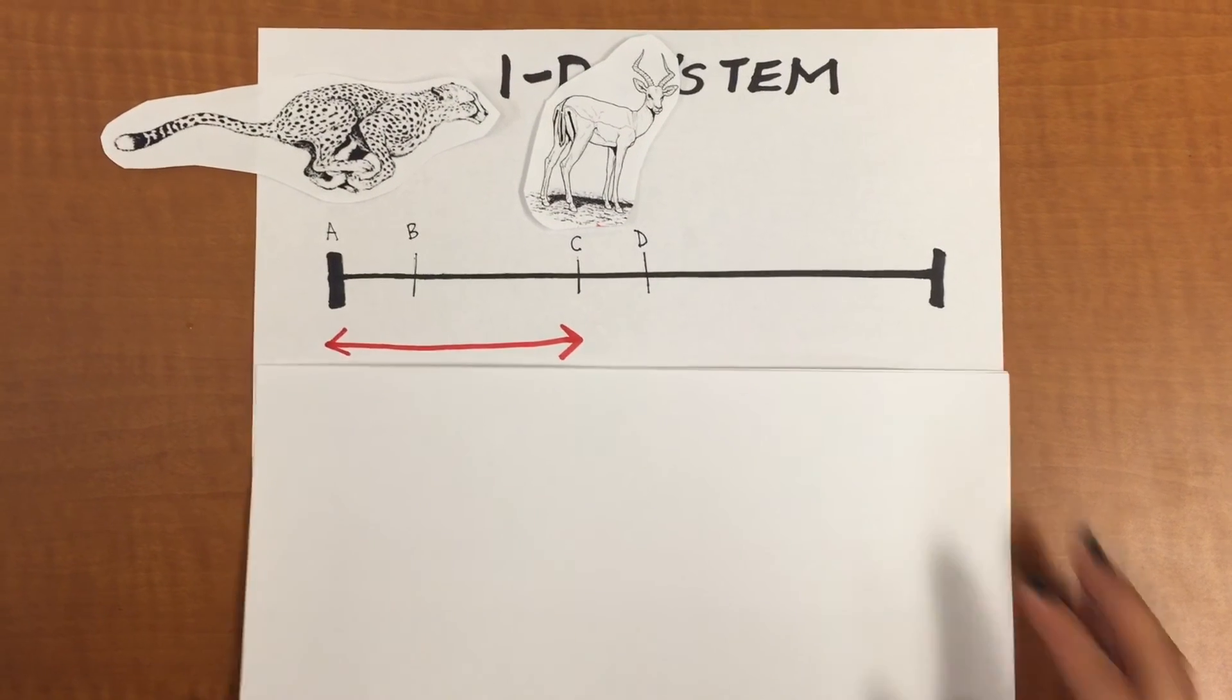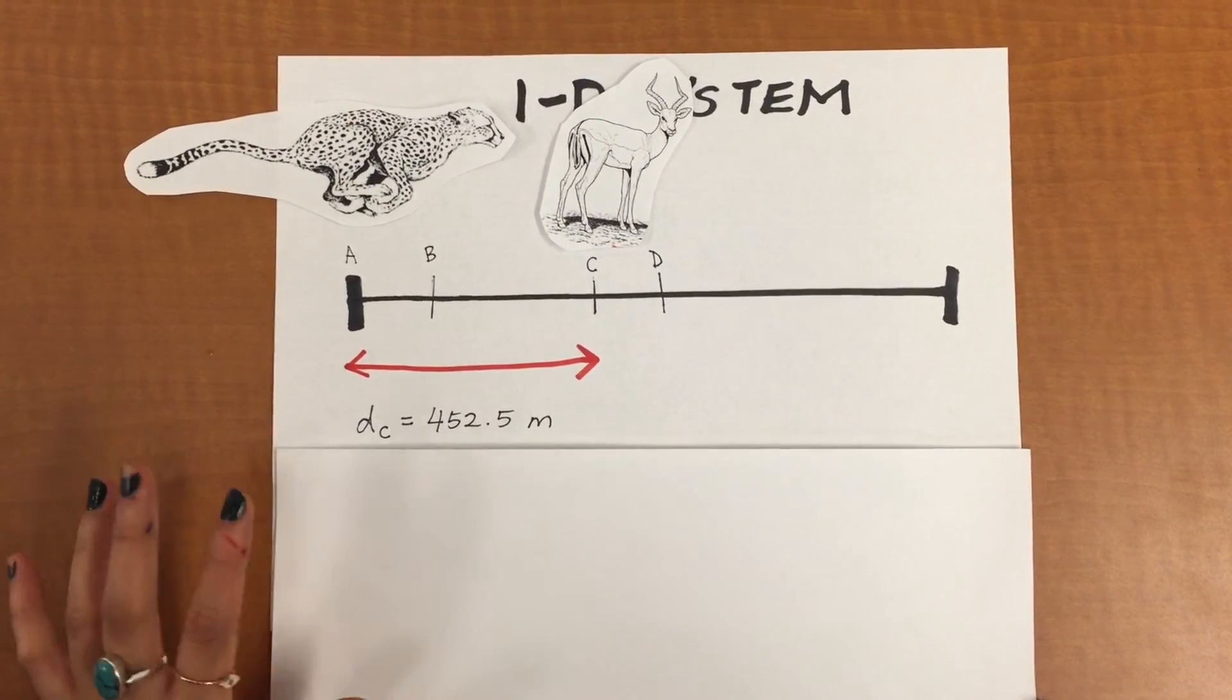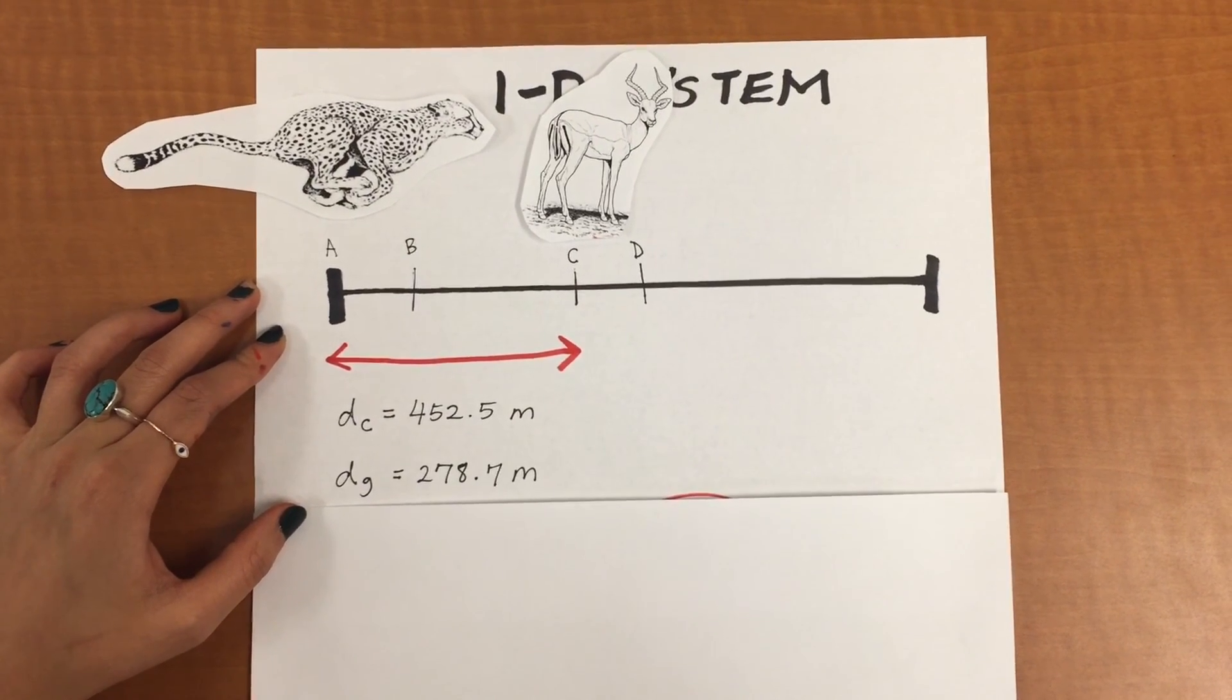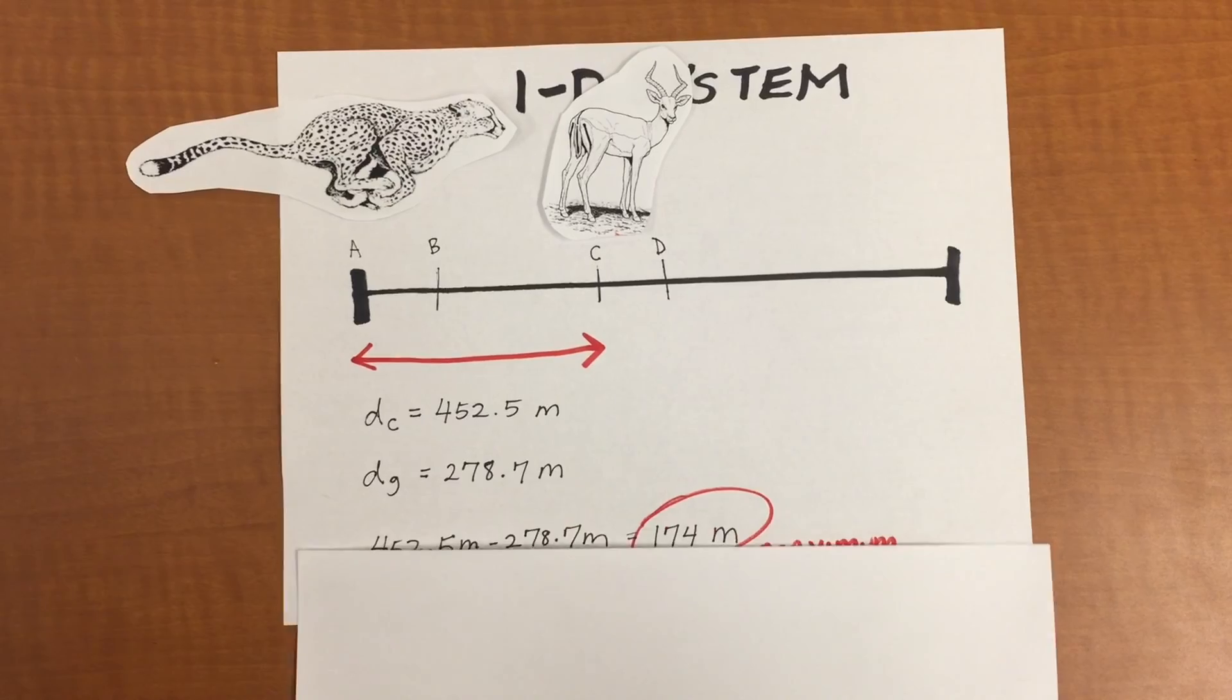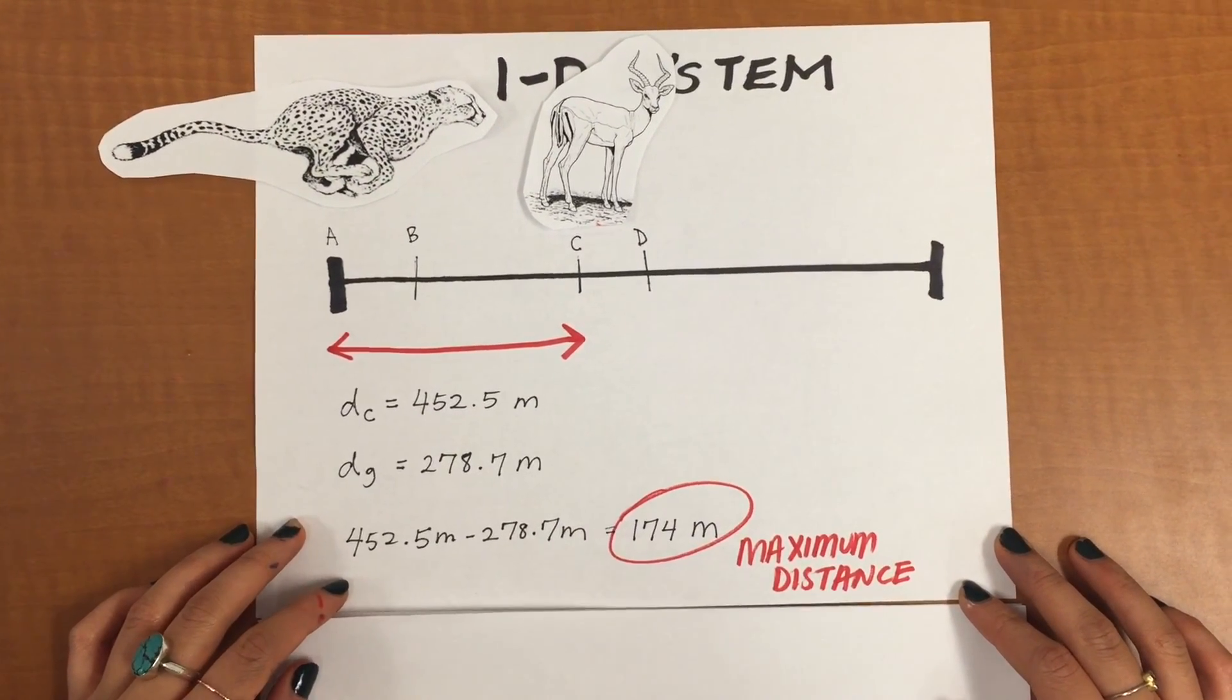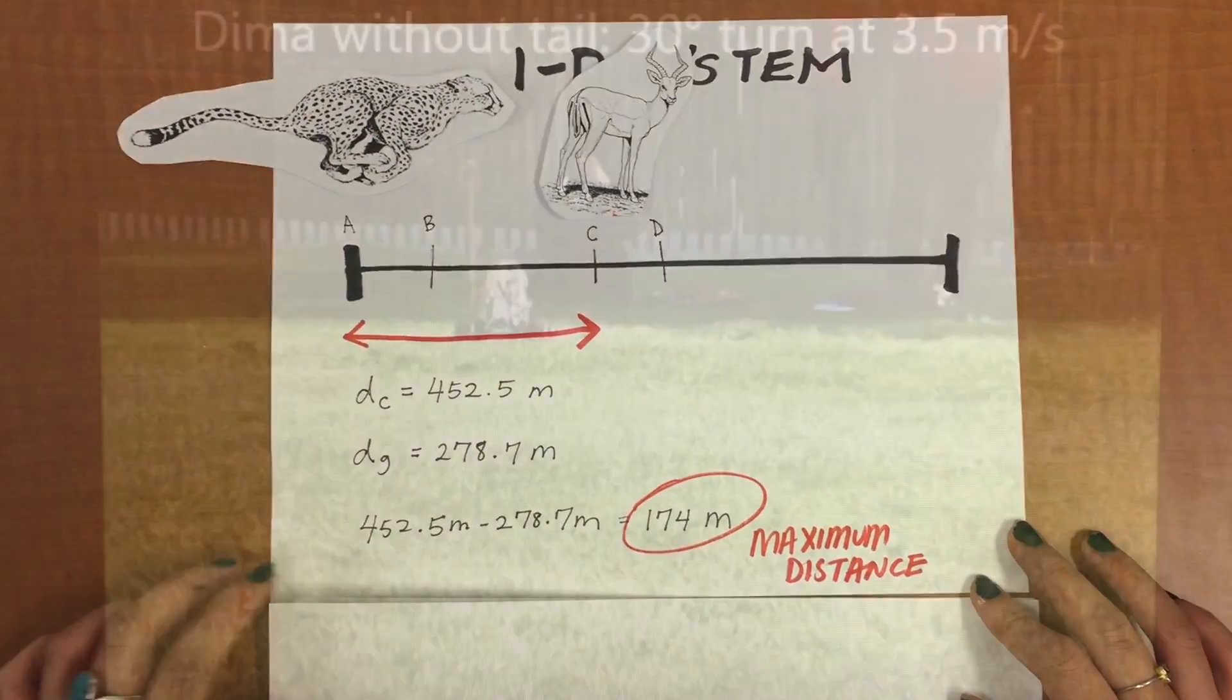Summing it up, the cheetah traveled a total distance of 452.5 meters. The gazelle traveled a total of 278.7 meters. To find the distance between A and C, subtract the distance the gazelle traveled by the distance the cheetah traveled and that gives you 174 meters, which is the maximum distance the gazelle can be away from the cheetah for the cheetah to still be guaranteed to catch it.